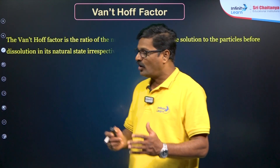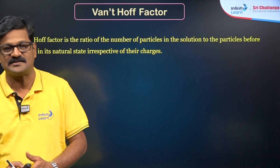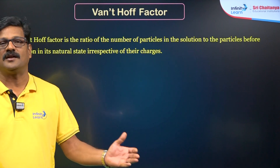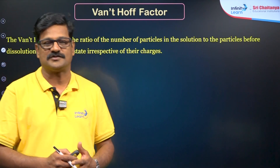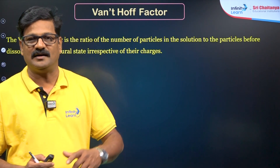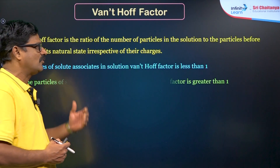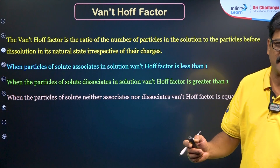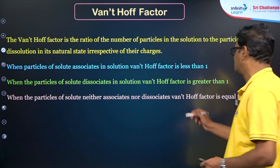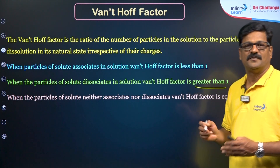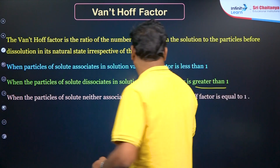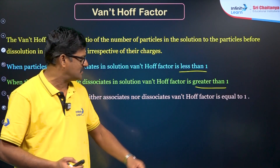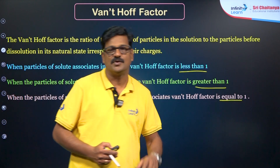The Van't Hoff factor (i) is the ratio of the number of particles after association or dissociation to the total number of moles of the electrolyte dissolved. The Van't Hoff factor can be 1, greater than 1, or less than 1. If dissociation takes place, i is greater than 1. If association takes place, i is less than 1. If there is no association or dissociation, i equals 1, just like a non-electrolyte.